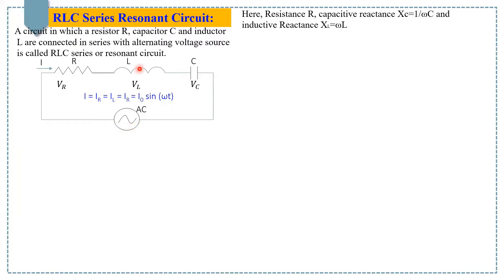All three elements are linear and passive in nature. Passive means these elements consume energy rather than producing it, and linear means these components have linear behavior between voltage and current.